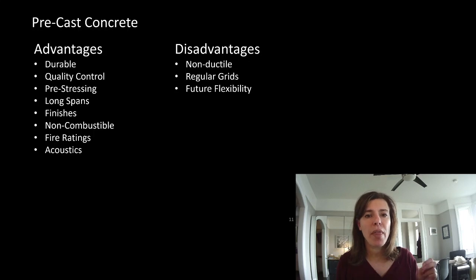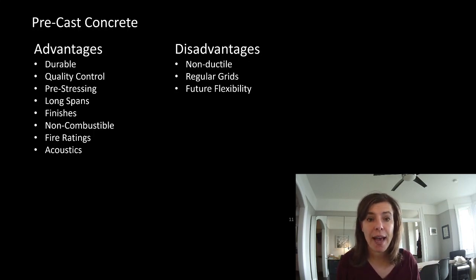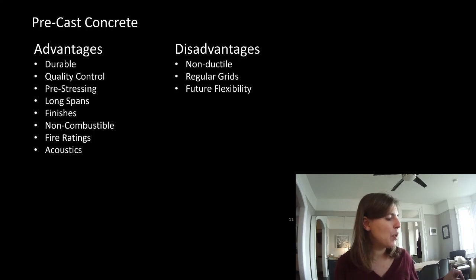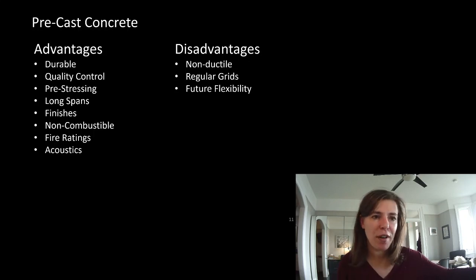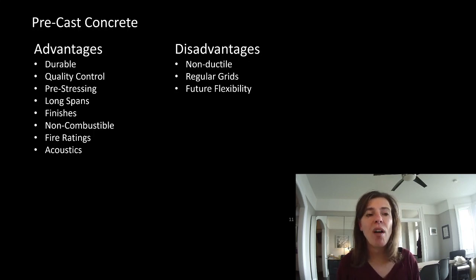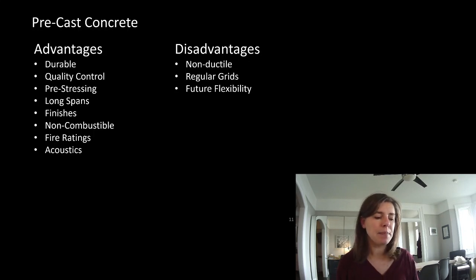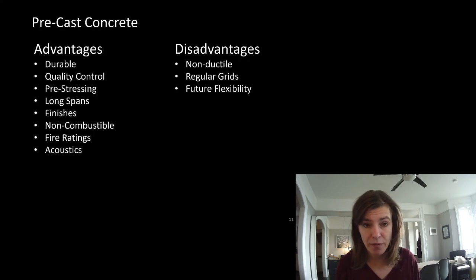We'll talk specifically about one type of precast called hollow core when we do our sizing guidelines later in the term. It basically lets us replace concrete on metal deck and purlins or open web steel joists with one thing, making construction a bit smoother. There are teachers at U of T who hate it on principle, but I cannot deny a market or tell a client to ignore a good idea based simply on preference - I have to do what's appropriate for the project. Precast can be better environmentally because we have less waste, it's more controlled and refined. If we accept that concrete is a bad building material environmentally, precast is the lesser evil.